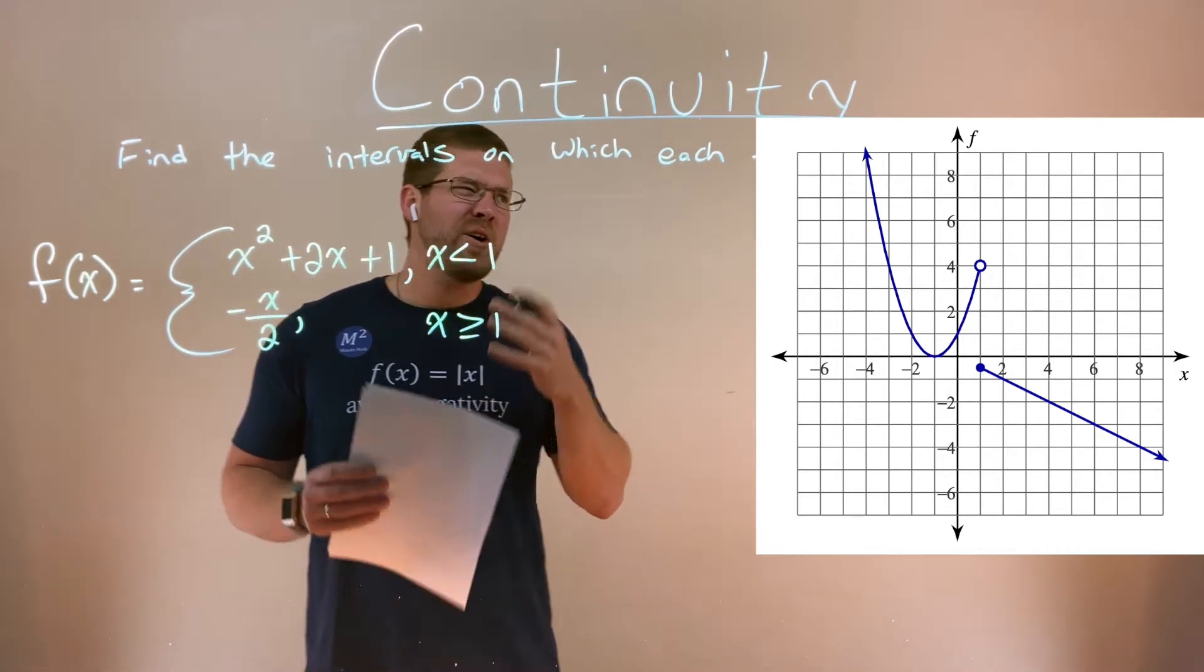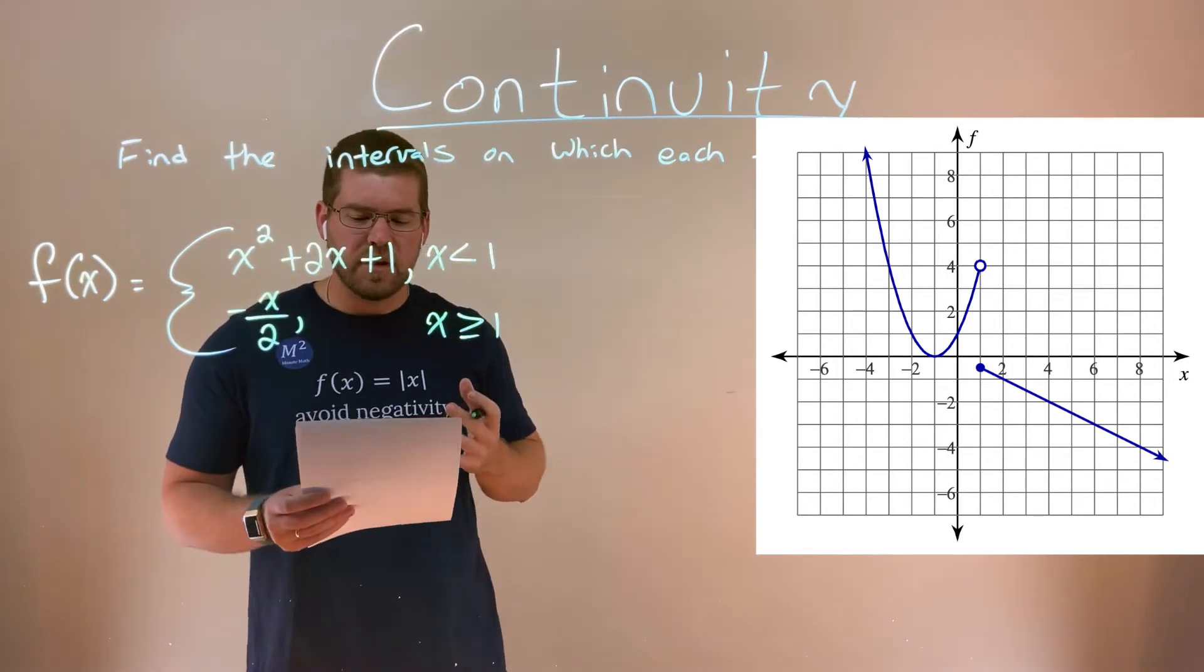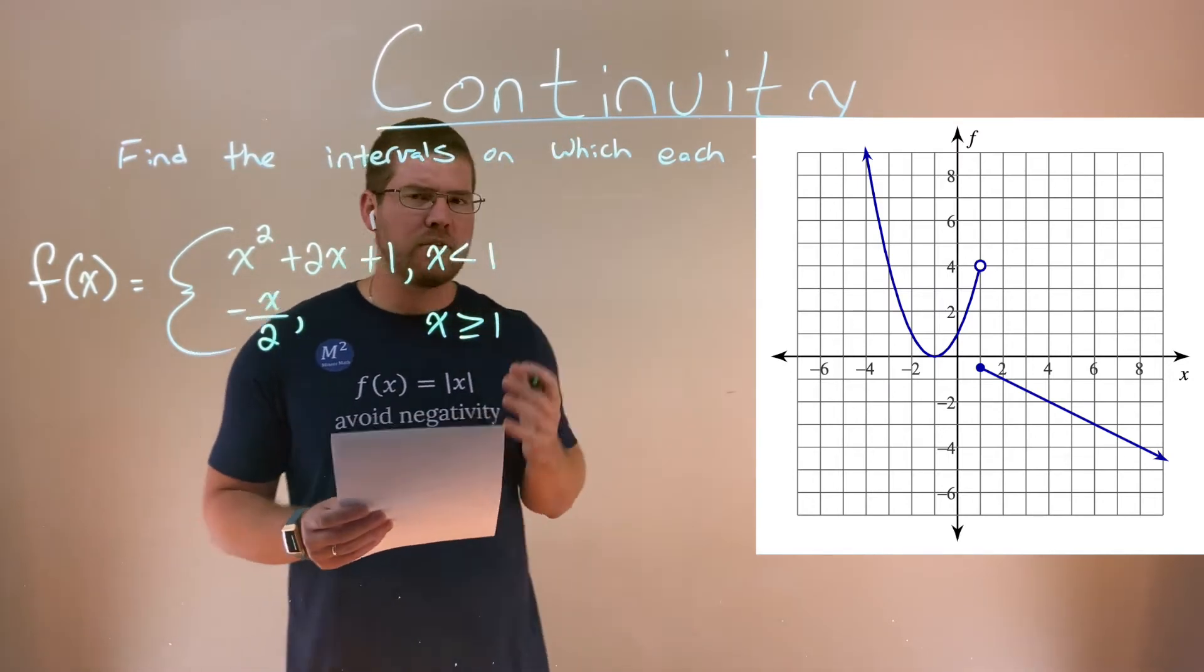And we need to find where this function is continuous. Now, we're given a graph here of this piecewise function to help us out.